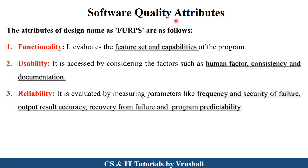The next is software quality attributes. There are a total of five quality attributes. While developing a particular product, you must follow these quality attributes. The first one is functionality — while developing a product, you should evaluate all the feature sets, all the requirements given by the customer, and all the capabilities of the program. The next one is usability — usability considers factors like human factors, consistency, and documentation; whether your product is usable by each and every person, user, or stakeholder in the project. Next is reliability — reliability considers things like frequency and security of failure, what type of solution exists if the system fails, output accuracy, recovery from failure, and program predictability.